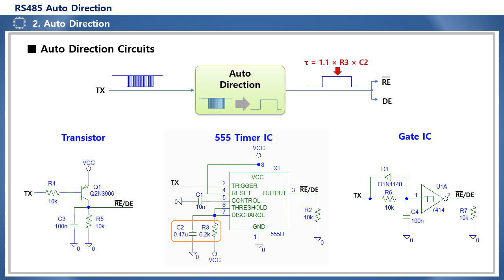The 555 timer IC circuit uses a monostable multivibrator, triggers with the first falling edge of the TX signal to create a logic high, and the duration of this logic high is determined by the resistor R3 and capacitor C2 connected externally. The duration of the logic high of this control output signal is determined by the relationship of 1.1 times R3 times C2. You can set the R3 and C2 values so that the logic high is maintained for the length of the TX packet. Since the TX signal packet length differs depending on the transmission speed or application, tuning of the external resistor R3 and capacitor C2 is required.